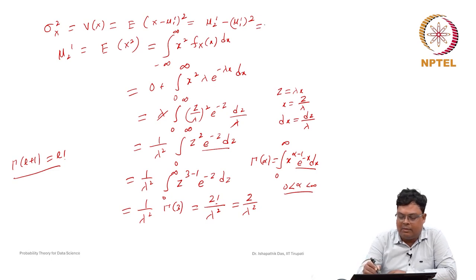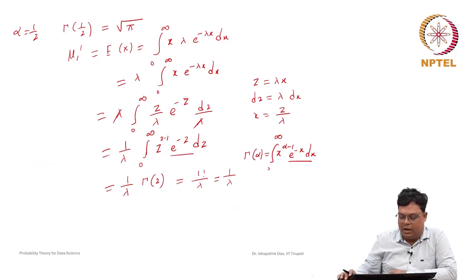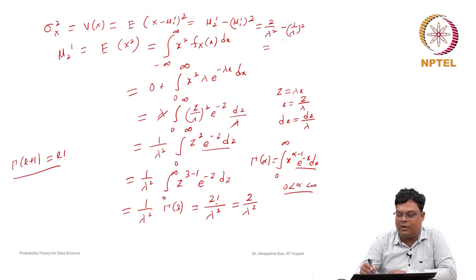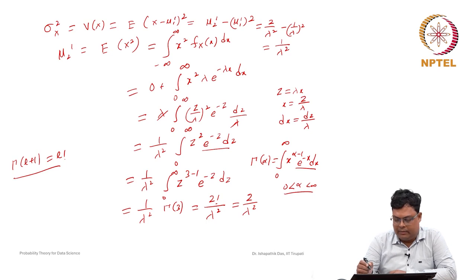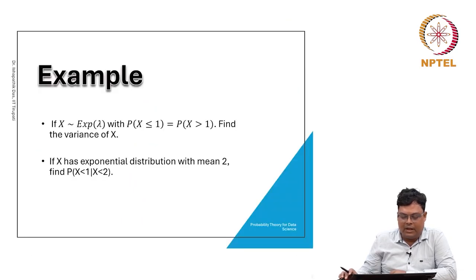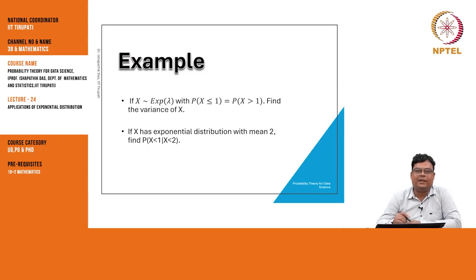Therefore, variance of X = mu_2' - (mu_1')^2 = 2/lambda^2 - (1/lambda)^2 = 2/lambda^2 - 1/lambda^2 = 1/lambda^2. So the variance of the exponential random variable is 1/lambda^2 and the mean is 1/lambda. We have found the probability density function, cumulative distribution function, their graphical representations, and now the mean and variance.